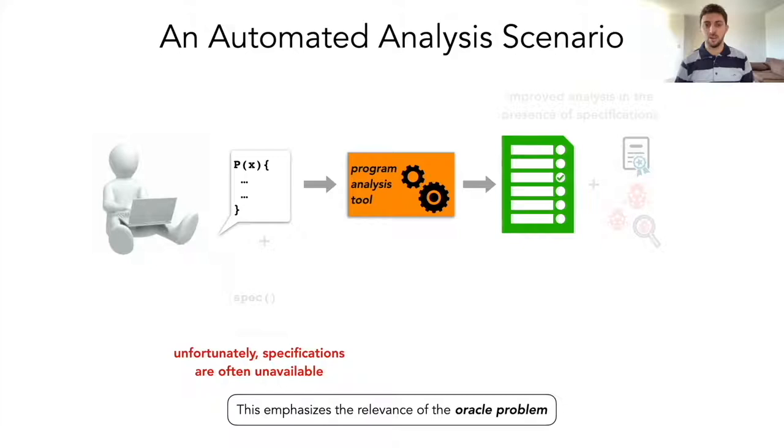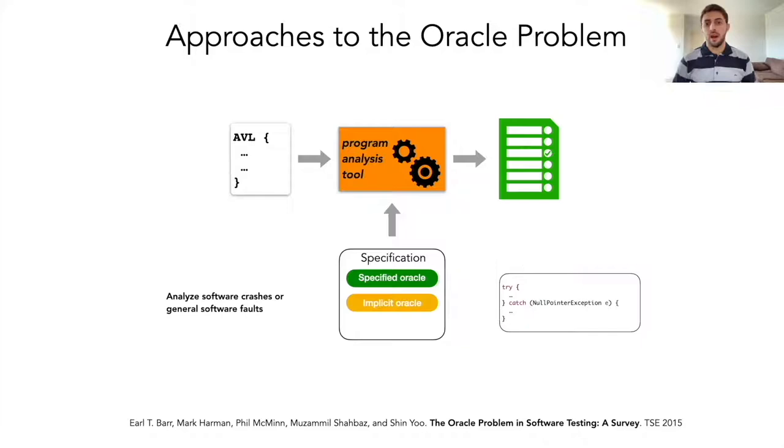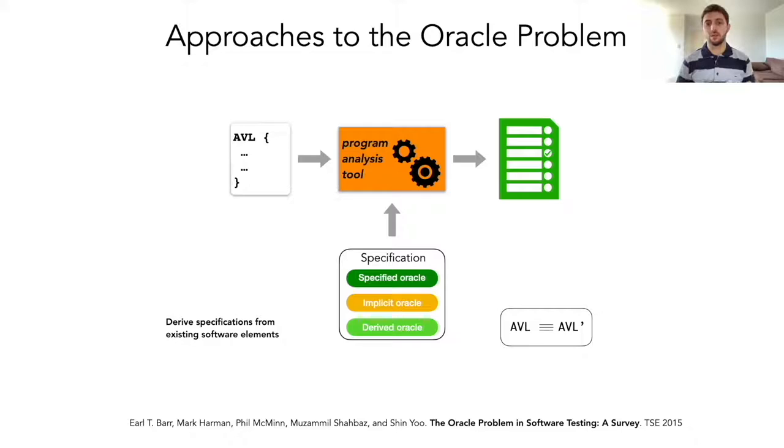There are many approaches one may take to the Oracle problem. One is the use of manual specifications describing the intended behavior of the software. Another is to analyze the software to find general software faults, such as unexpected exceptions. And another is to derive specifications from existing software elements, such as previous versions.